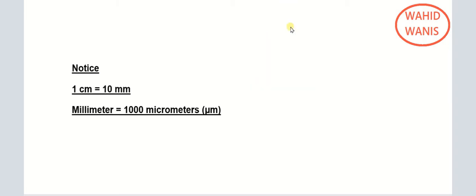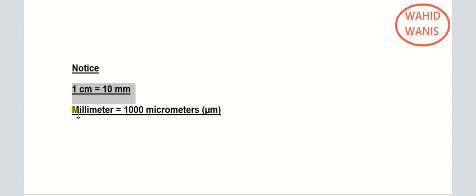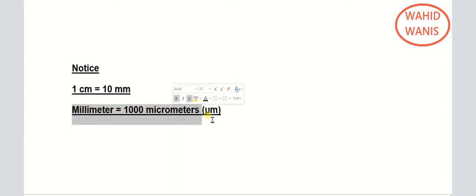Now let's think about units. One centimeter equals 10 millimeters, and one millimeter equals 1000 micrometers. There are other units, but at all levels you need to know: 1 centimeter equals 10 millimeters, and 1 millimeter equals 1000 micrometers.